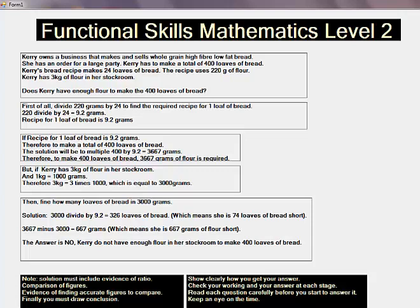Carrie owns a business that makes and sells whole grain high fiber low fat bread. She has an order for a large party. Carrie has to make a total of 400 loaves of bread.